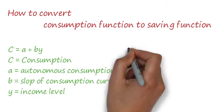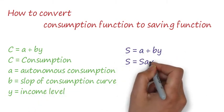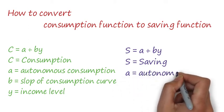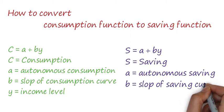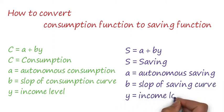Y means income level. Now let's look at the saving function: S = a + bY. S means saving, a means autonomous saving, b means the slope of the saving curve, and Y means income level.